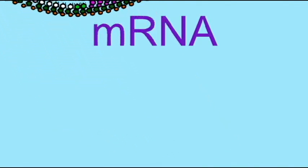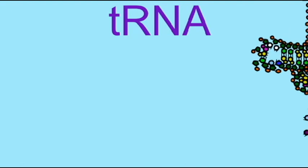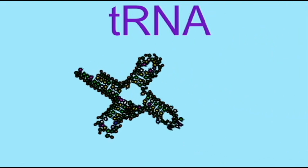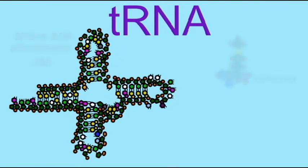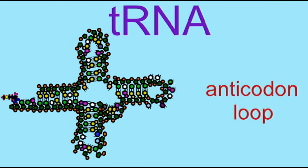RNA serves many roles in helping to transform the genetic code, which is stored in the nucleus, into the proteins which are made in the cytoplasm. The proteins then run the cell. RNA forms the transcripts which copy the DNA and carry the code out to the cytoplasm.